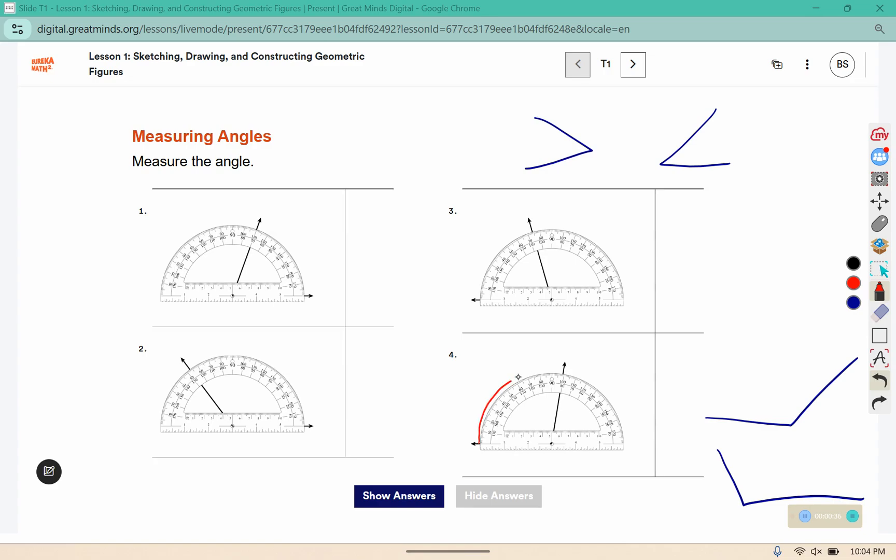This one opens up past 90, so we have either 100 or 80 to choose from. Since this is an obtuse angle, we would want to use the 100 degree measurement.